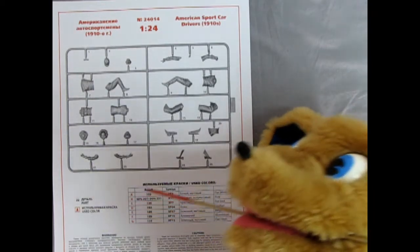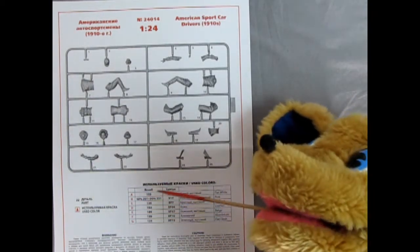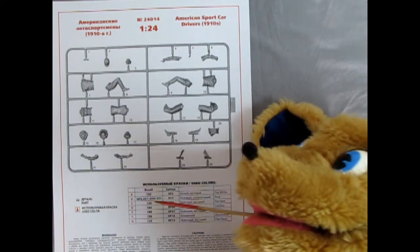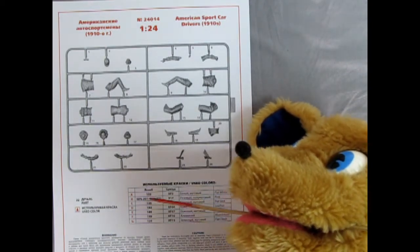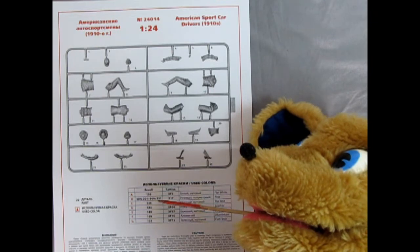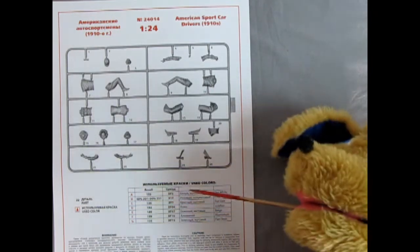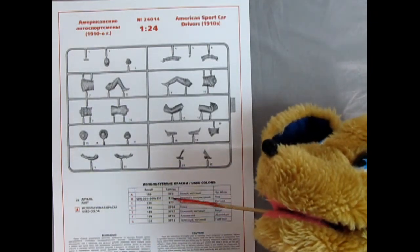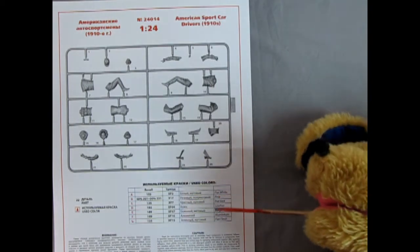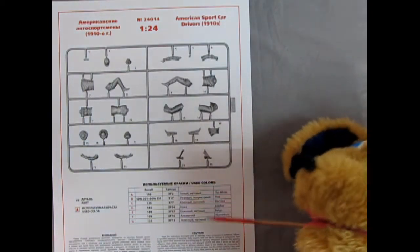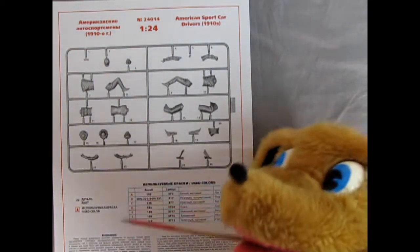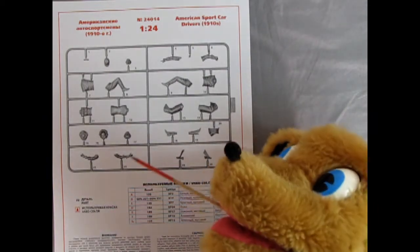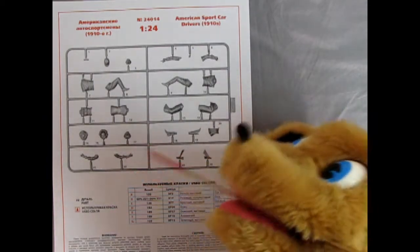All right, so there's the colors that you'll see on the back and the different paints. And here we actually have a ratio, so 50% 301 and 50% 311 in the Revelles, or you could use Tamiya X17. And then it tells you what all the colors are here. Trevor will probably paint this with Citadel paint.